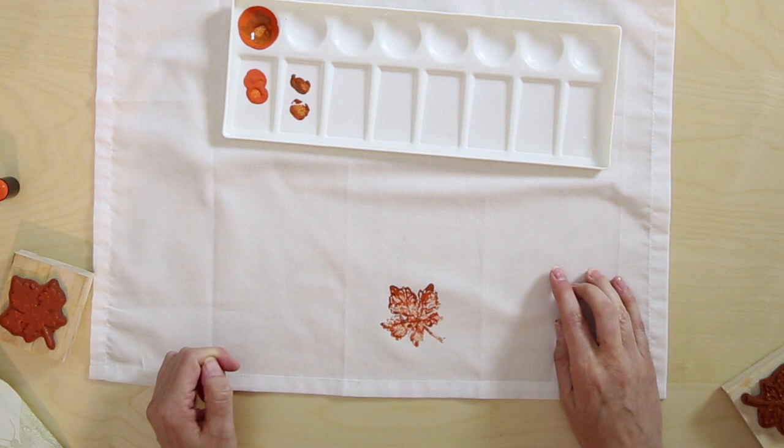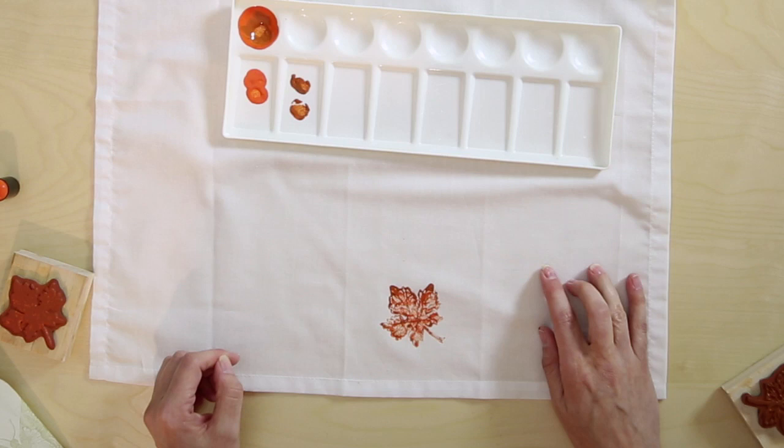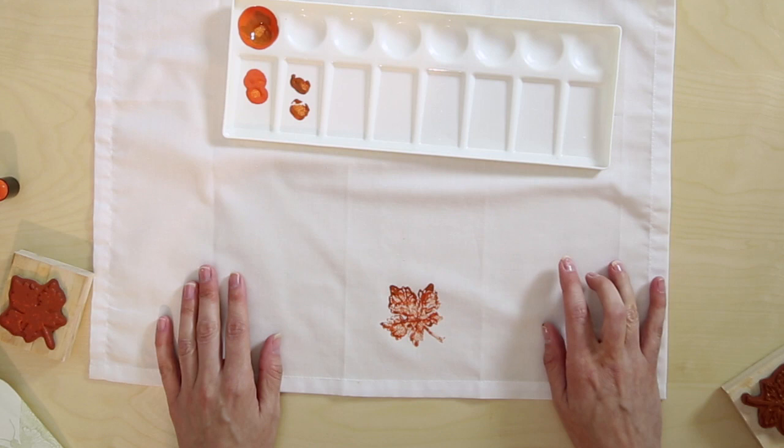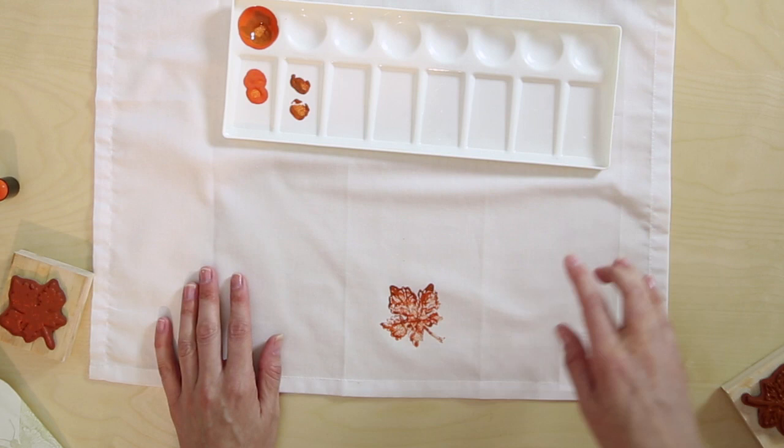When you're done, you can heat set that with your heat tool. These acrylic paints do dry quickly, so you're going to need to clean your stamps as soon as you can. Stampin' Mist works really well to clean the acrylic, so even if you wait until the paint has dried, you should still be able to get them clean with a combination of Stampin' Mist and elbow grease.